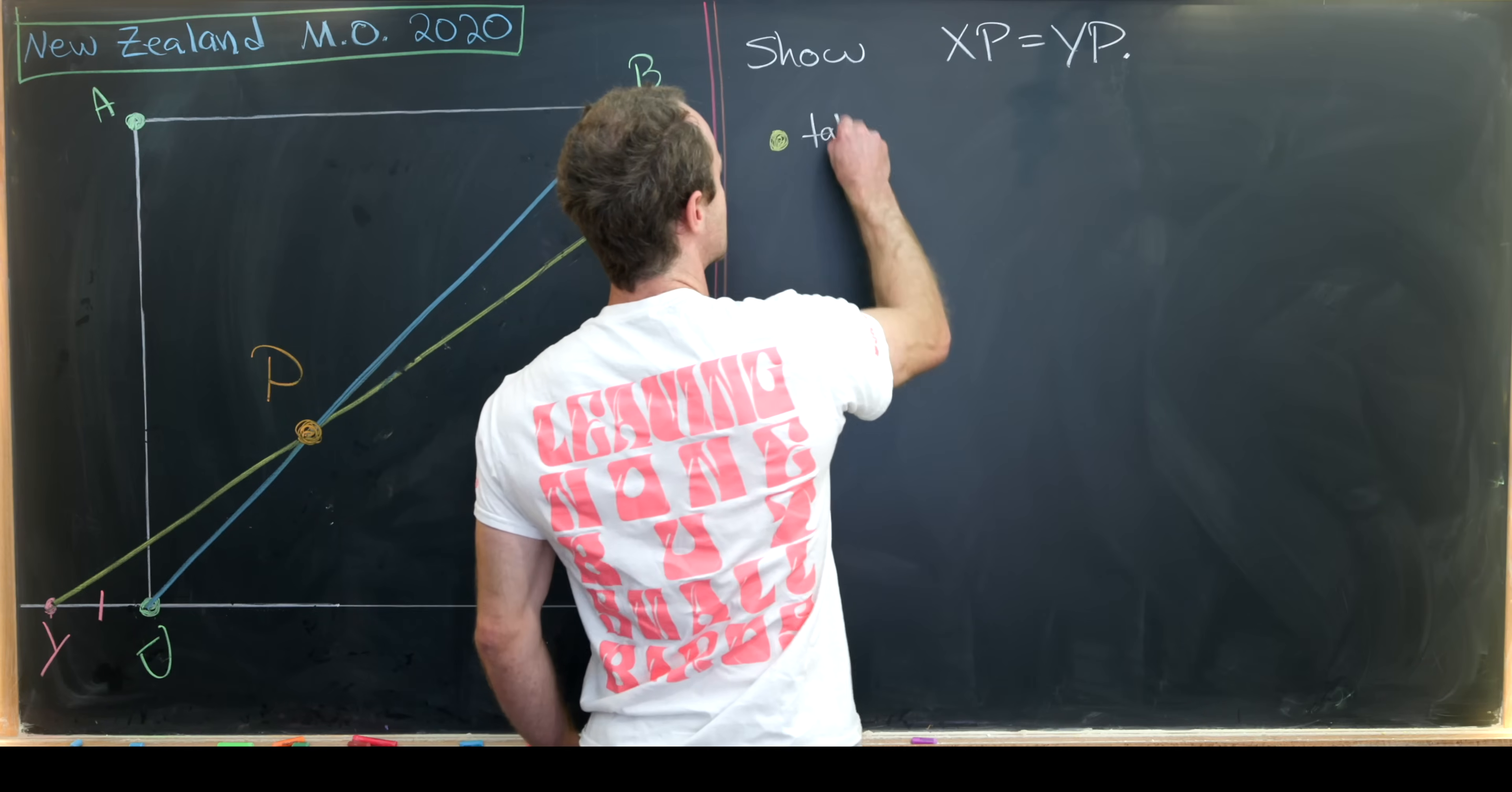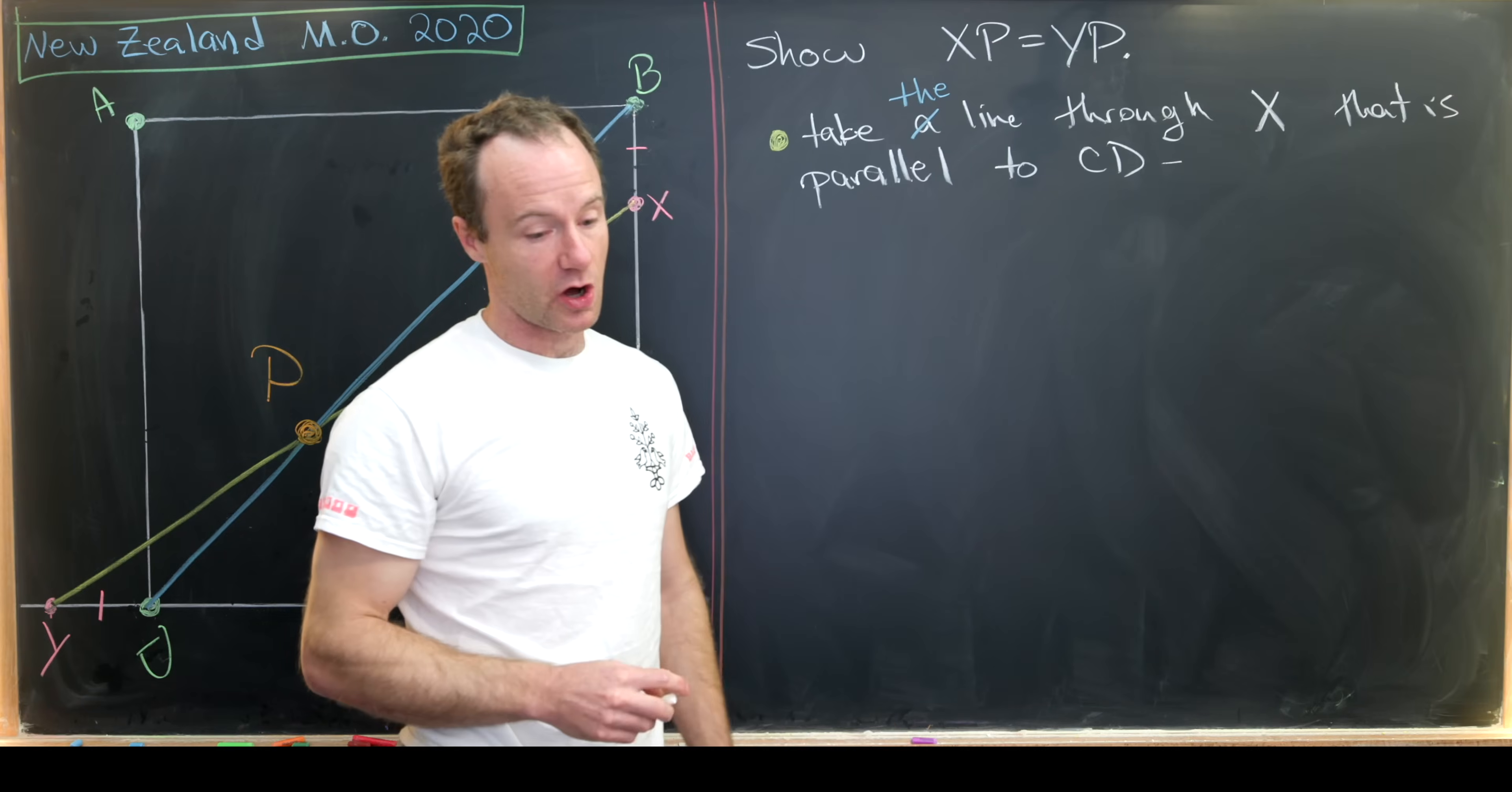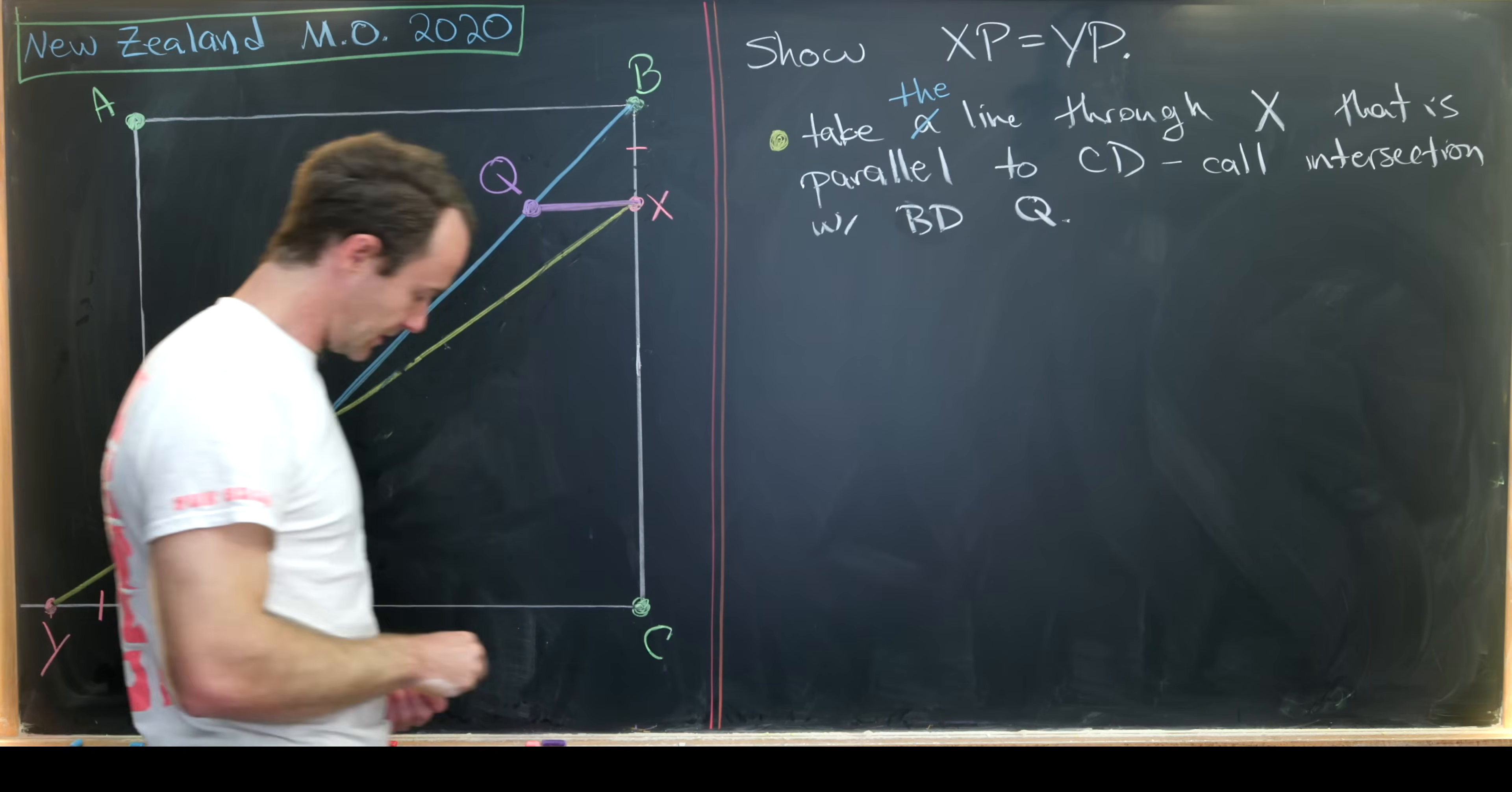So let's first take a line through X that is parallel to CD. And by the parallel postulate, we know that this line is actually unique. So instead of saying take a line, we could just say take the line through X that's parallel to CD. And then we'll see that it most definitely intersects BD, and we'll call that intersection Q. So let's get the Q on the board right now. So that means we need to extend this out so that it's parallel to CD. And we'll call this point right here, Q.